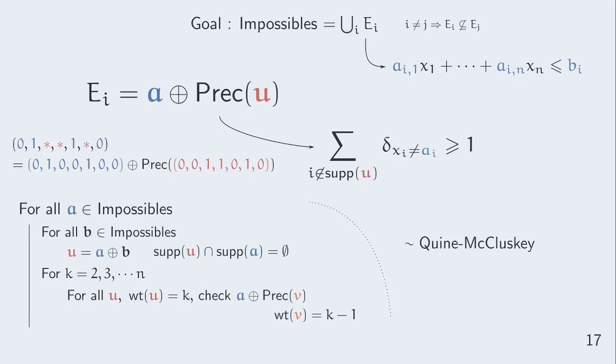A first step is to pack impossible points into sets A plus Prec of U. This is just a notation denoting the points that share the bits of A and whose bits can take any value at the positions given by U. Those sets only need one inequality to be discarded and there is a very simple algorithm to cover the impossible points with such sets.